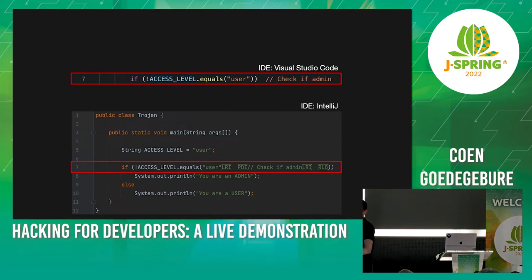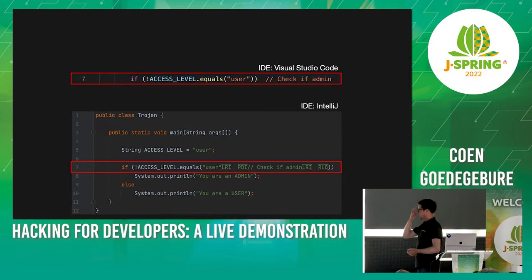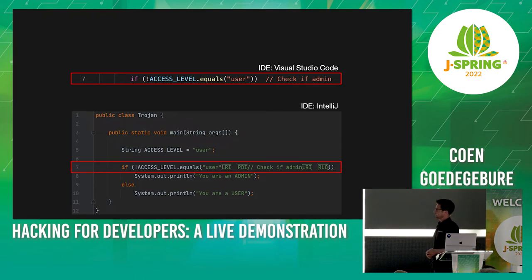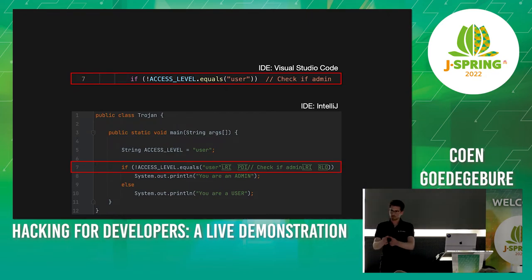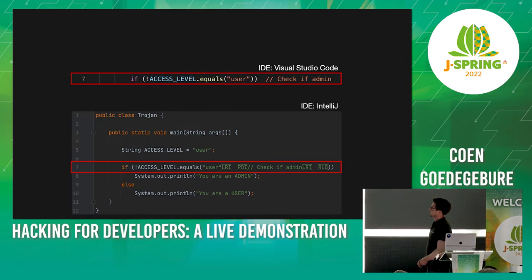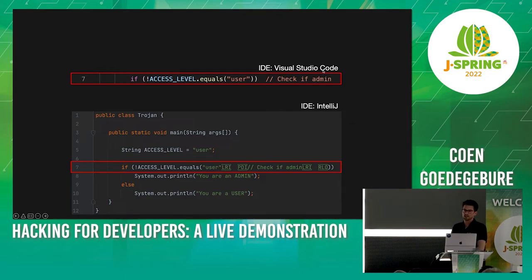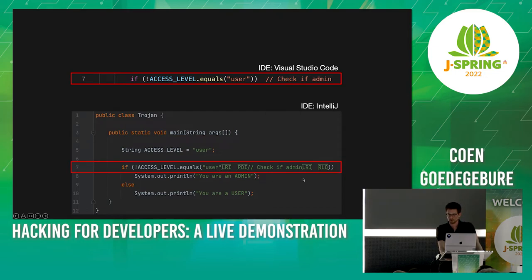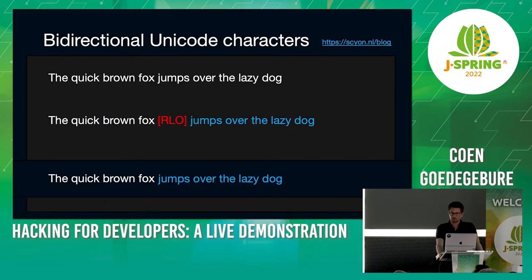How this works is explained in a GitHub repository. I'm tricking the IDE into displaying something different from what the compiler sees. The compiler interprets the bidirectional characters, but the IDE doesn't show them. In Visual Studio Code you can see the syntax coloring is wrong — it's still part of the string, not green. IntelliJ does a reasonable job because the quotes are placed in the wrong position, which is a hint.